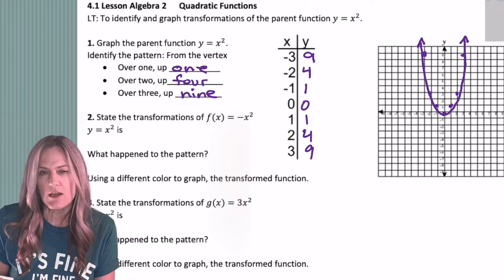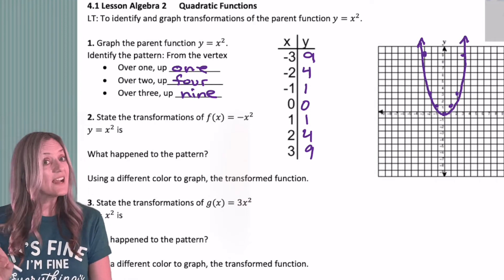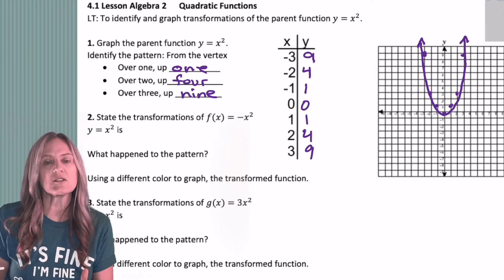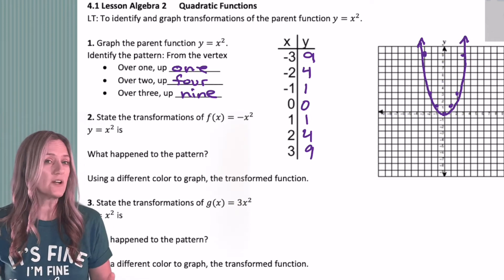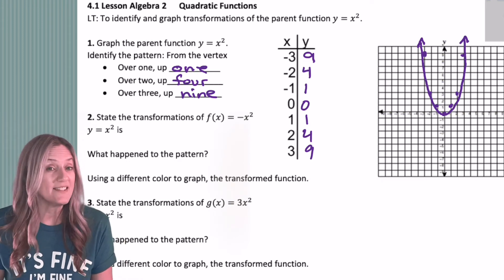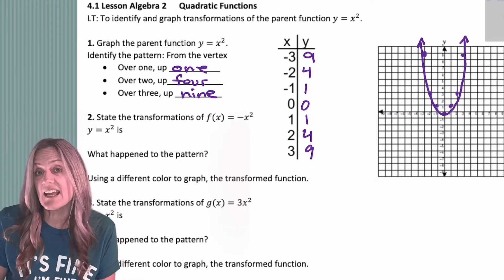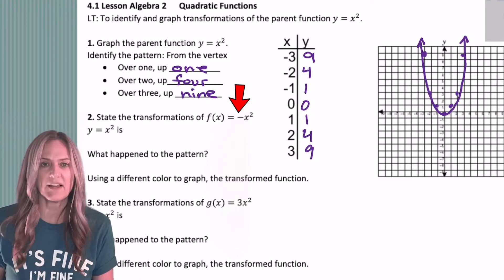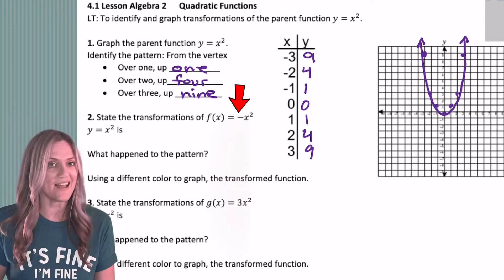Next, we're going to look at f of x equals negative x squared. The nice thing is all of the transformations that we learned for absolute value function apply to all of our parent functions. So what do we do here? Identify the parent function and then state the transformations. What does the negative do? Reflect it about the horizontal or x-axis.